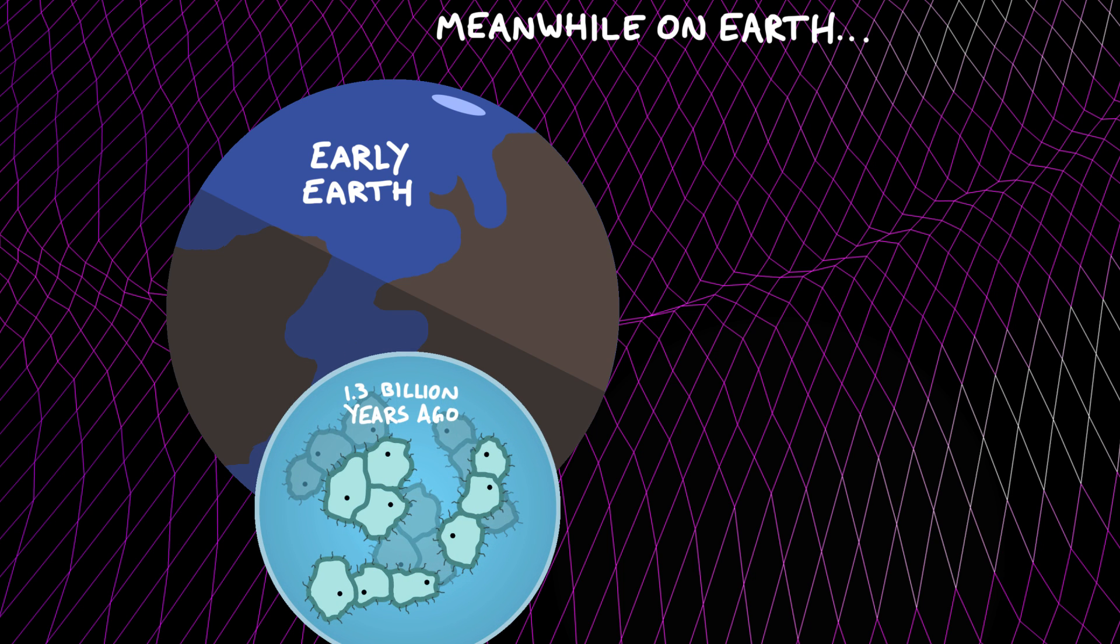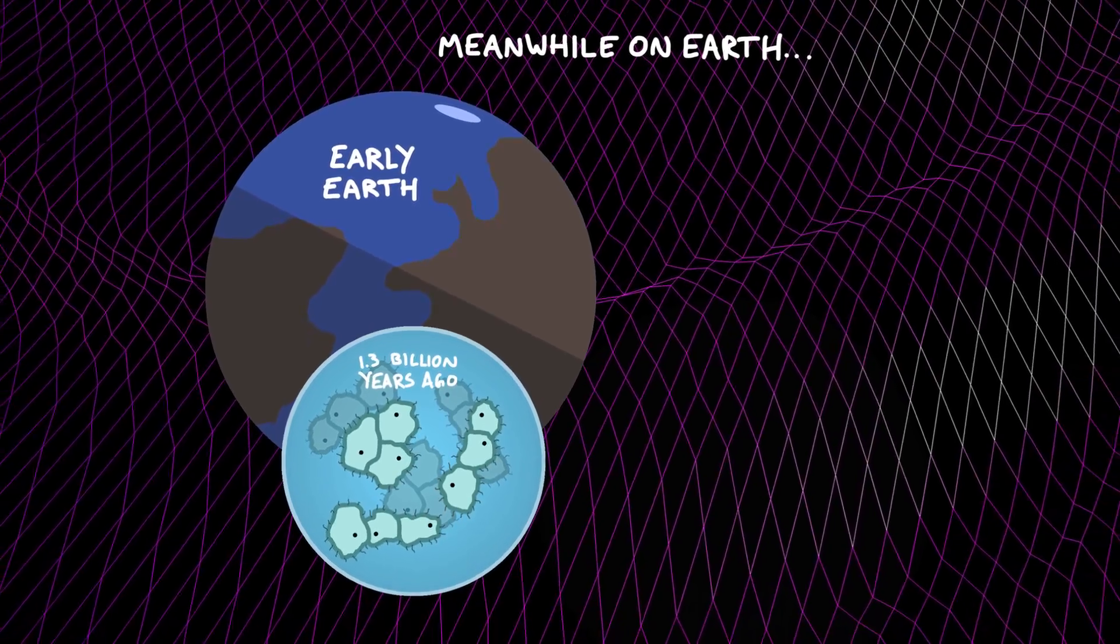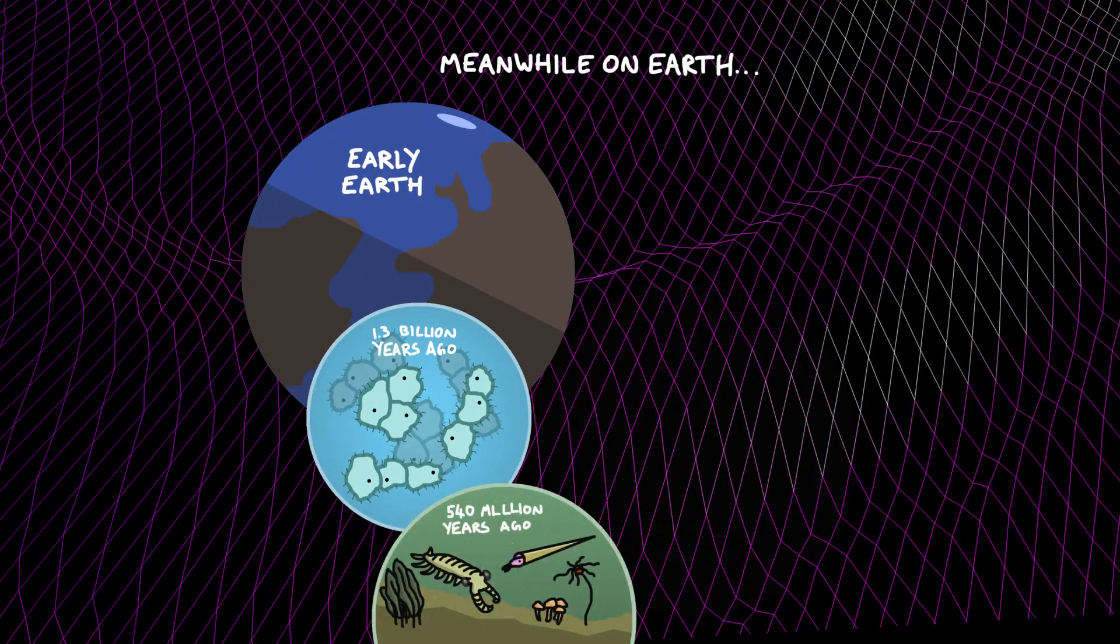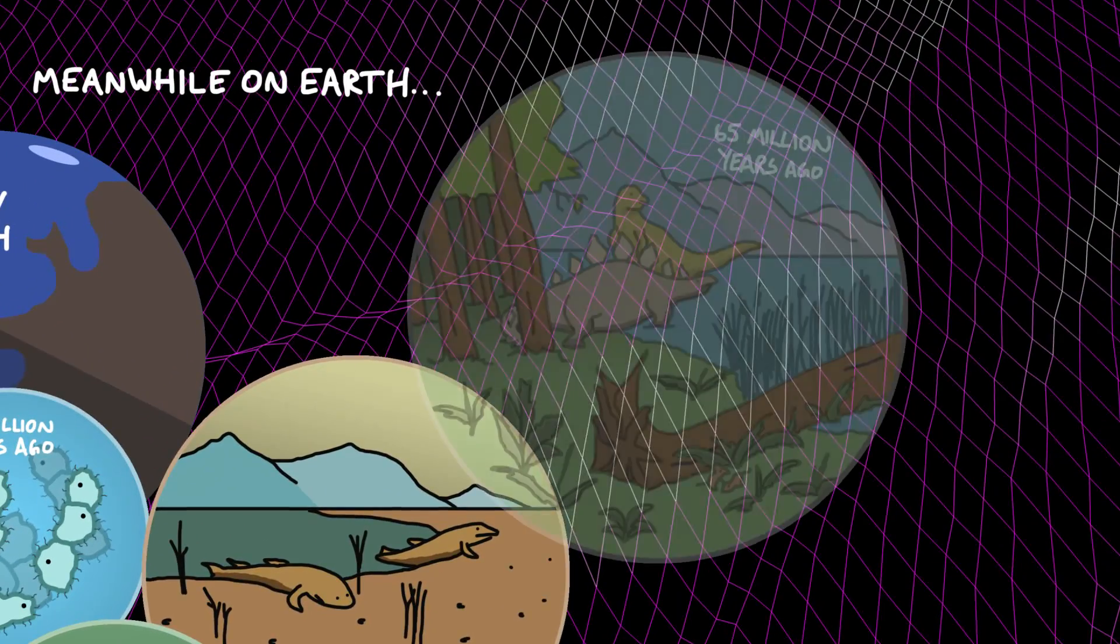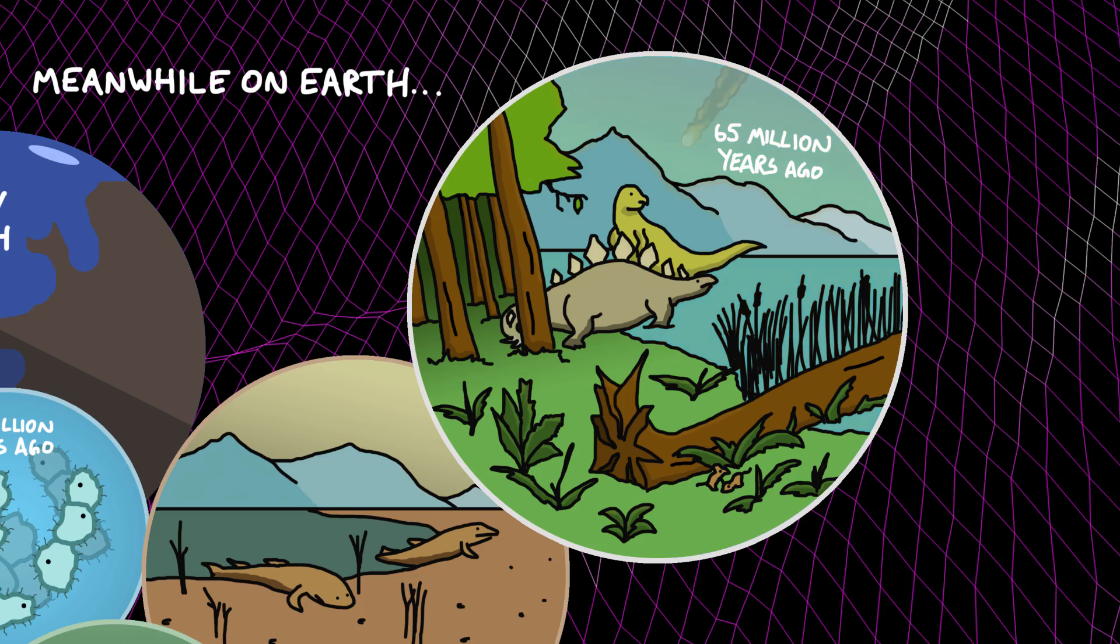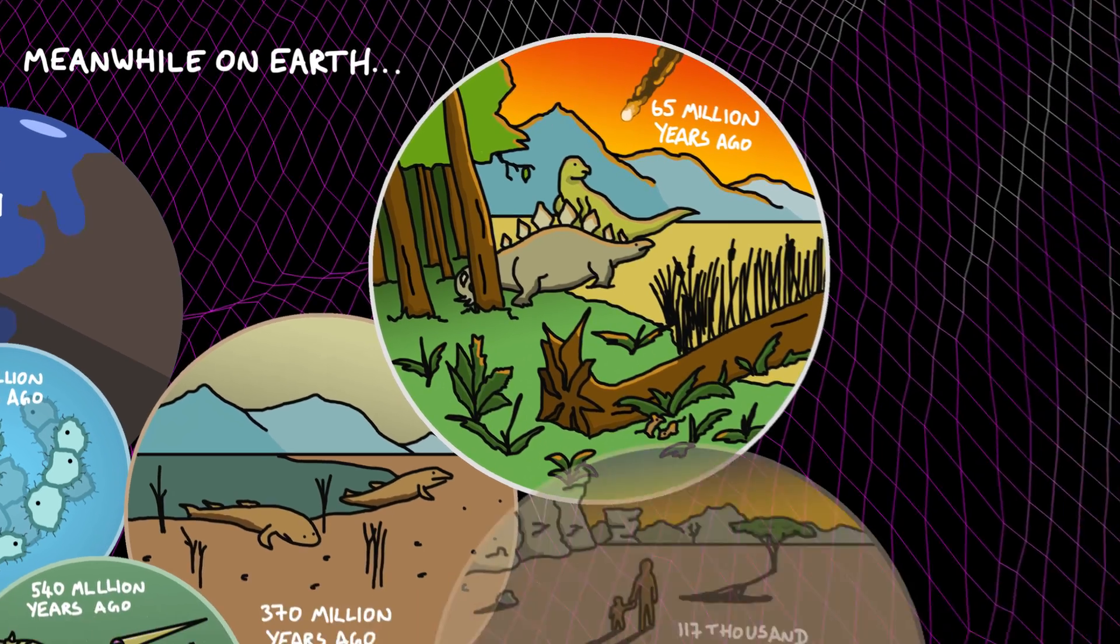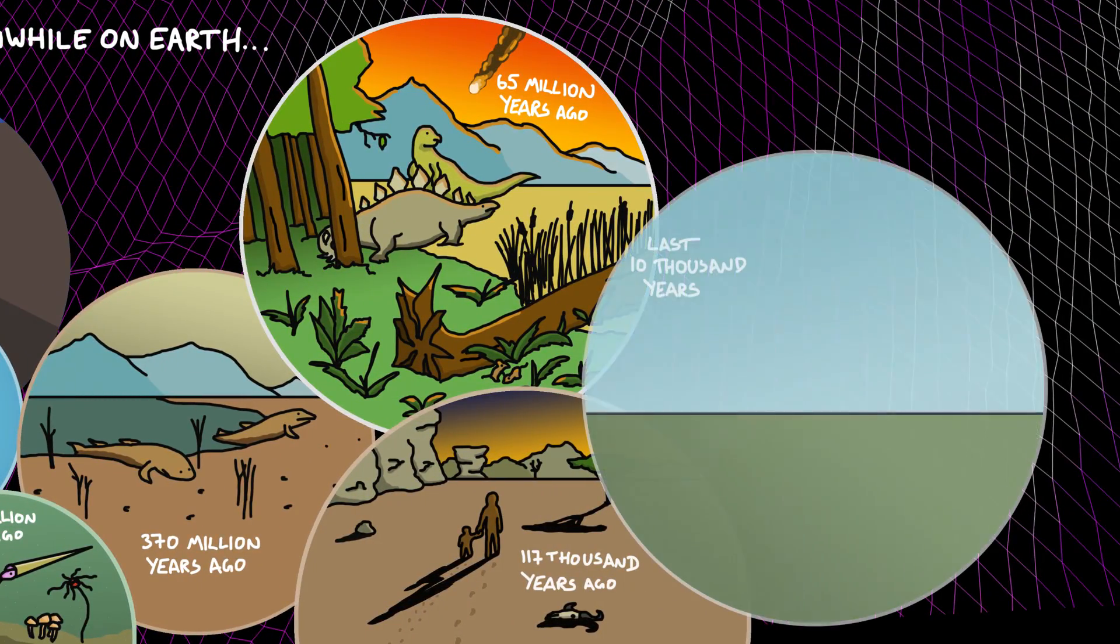And while the gravitational waves tore through space towards us, all of the complex life on Earth evolved and grew. Plants and animals developed. Amphibians crawled on land. There was extinctions. Reptiles and dinosaurs and mammals. More extinctions. Primates evolved into all of human civilisation.